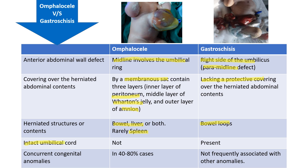Now this point — intact umbilical cord — is very important. When the patient is having a ruptured omphalocele with no intact umbilical cord, we can easily differentiate it from gastroschisis. Ruptured omphalocele and gastroschisis can sometimes be confused. So this point will give us a clue about whether it is omphalocele or gastroschisis: intact umbilical cord will not be present in any omphalocele, while it will be present in gastroschisis.